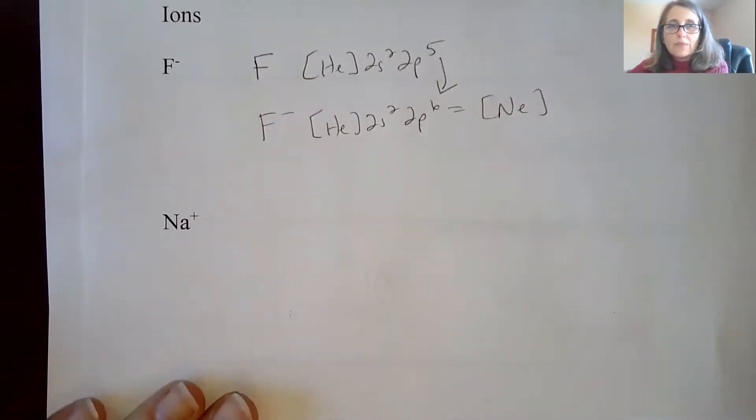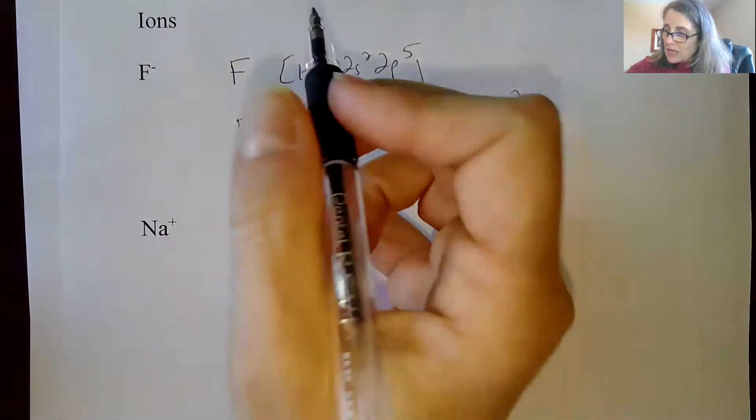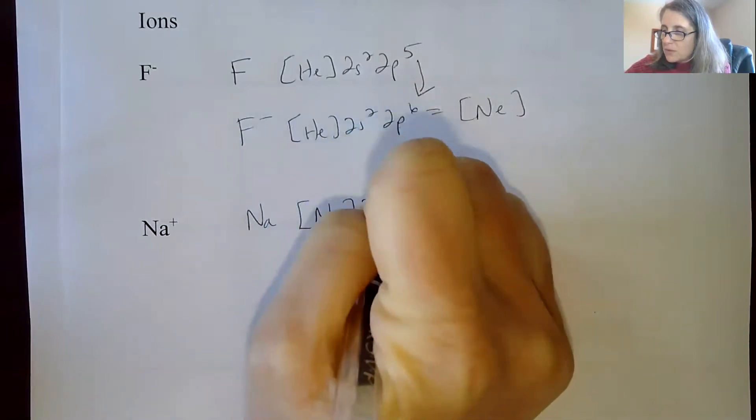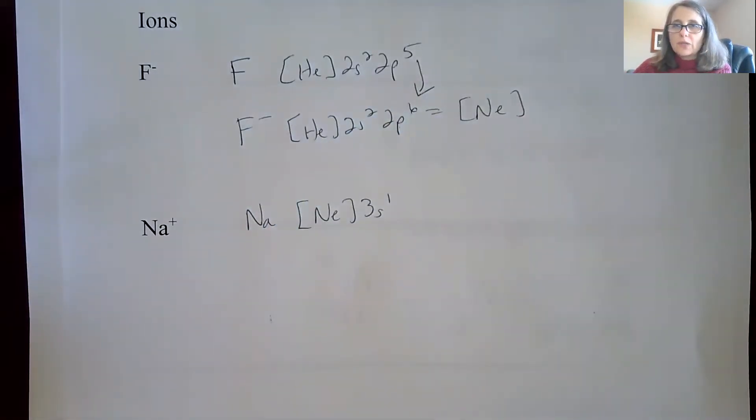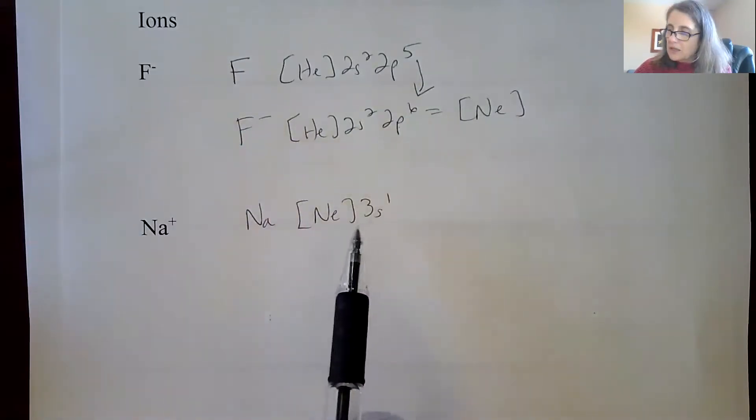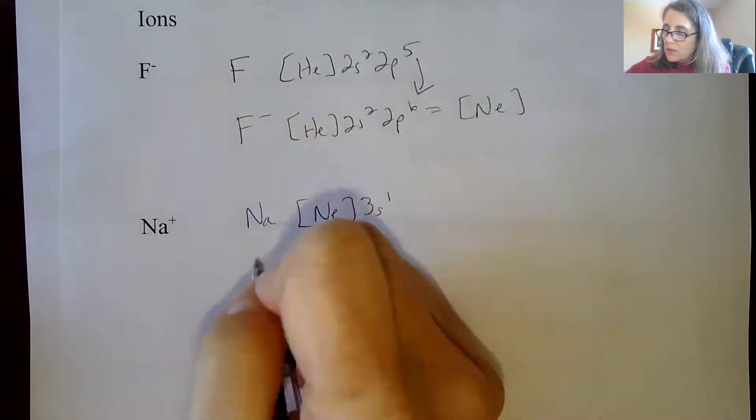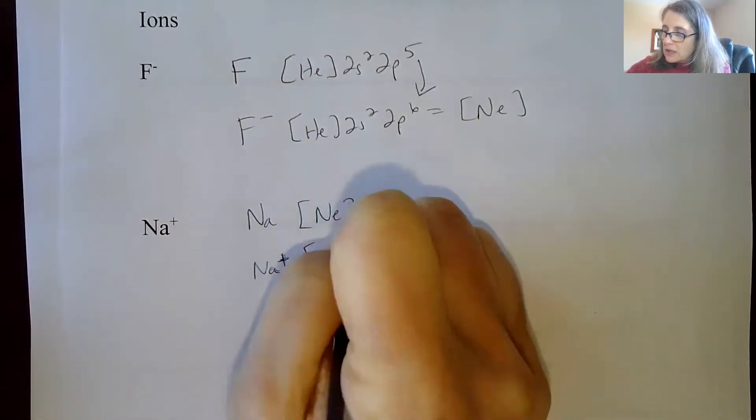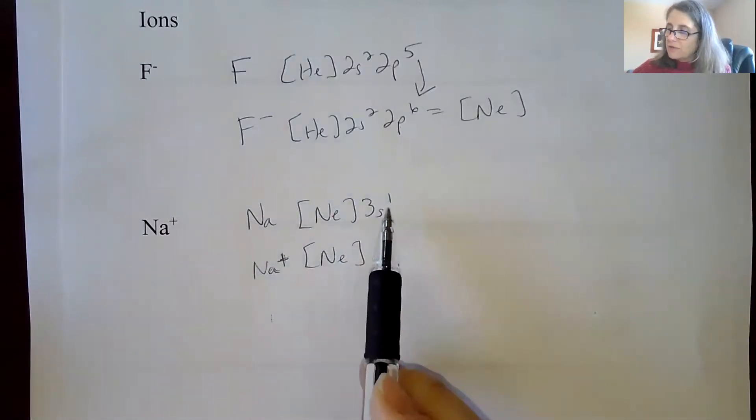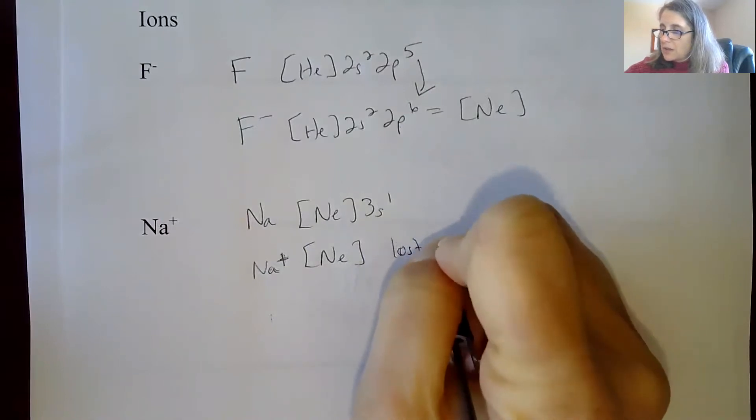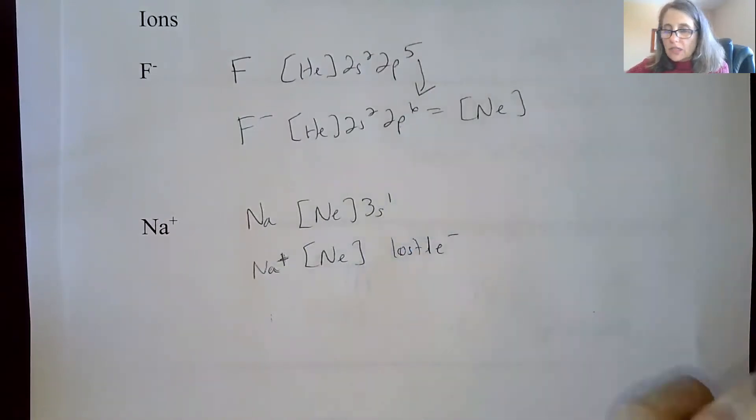And likewise with sodium, we've done sodium a couple different times. Sodium ion, sodium itself is neon 3s¹, just to show you the perspective of a cation. So this is your anion, this is a cation. So again, this is going to lose one electron when it becomes Na⁺. So it's going to become neon. Essentially, I've lost the 3s¹ electron. And that is where it's going to come from in the fact that it's the highest energy state. So that's going to be where the electron comes off of.